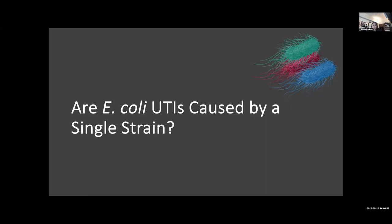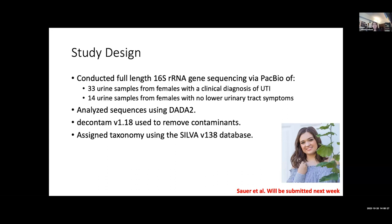In our study, we had 33 urine samples from females with a clinical diagnosis of UTI and 14 urine samples from females that had no lower urinary tract symptoms. All of these were catheterized urine samples. We conducted full-length 16S ribosomal RNA gene sequencing using the PacBio platform. The PacBio platform provides longer reads with a relatively nominal error rate. This was the work of a former student of mine, Delaney Sawyer, and we did our analysis using kind of the standard pipeline of DADA2.